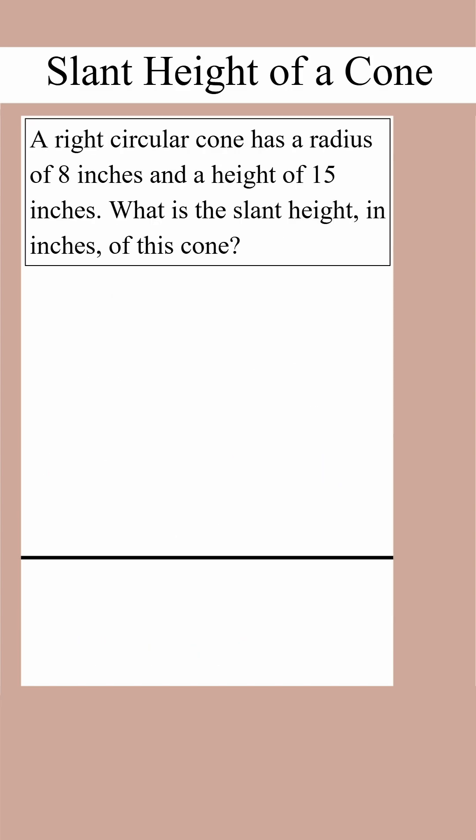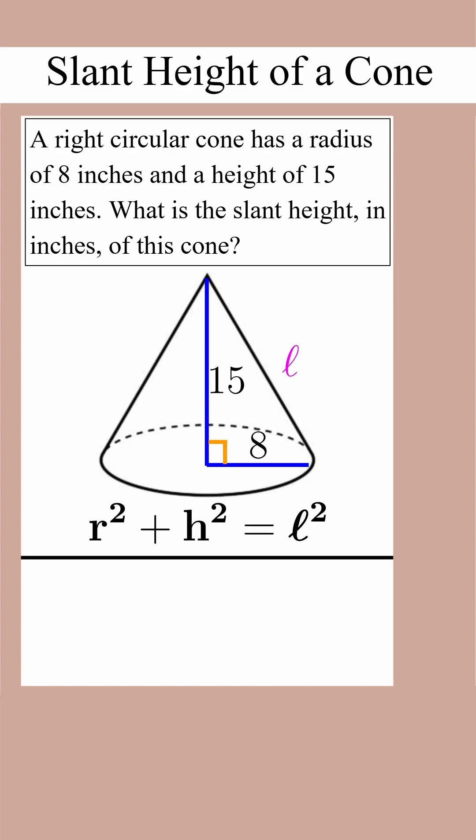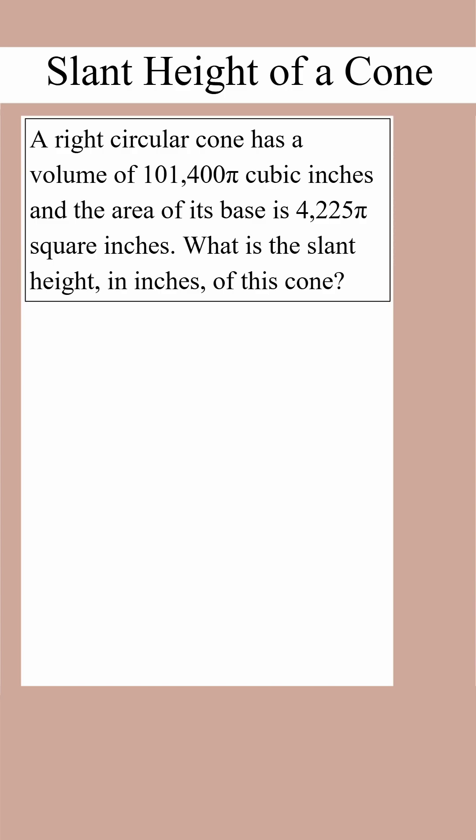In this example, we'll first add the radius and the height to our diagram. We'll then use the Pythagorean theorem to solve for the slant height, l. We get a slant height of 17 inches. Pause this video and take a second to write down this example.